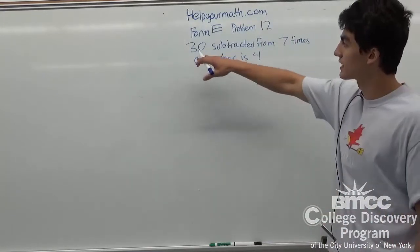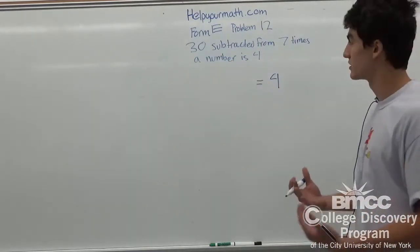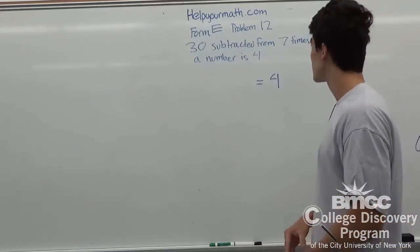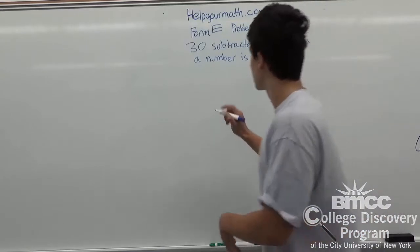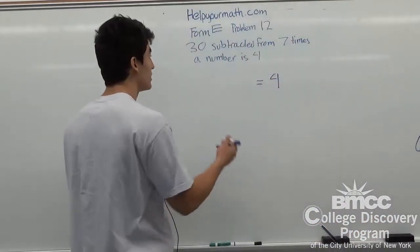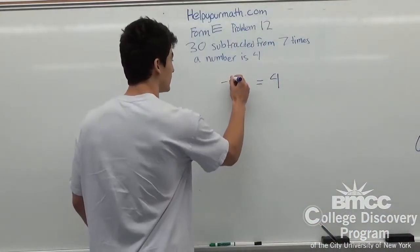The next step is to figure out what's on the other side of that equation. 30 subtracted from 7 times the number lets me know that it's going to be something times 7 minus 30. So I'll put the 30 here.